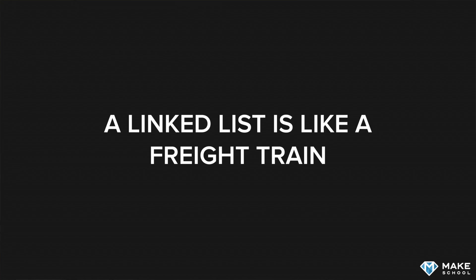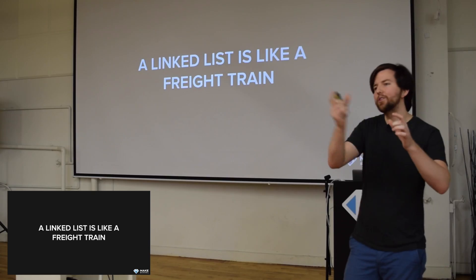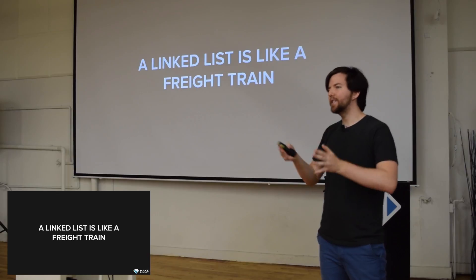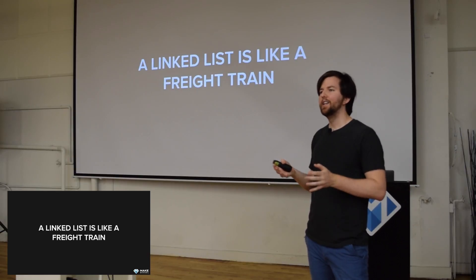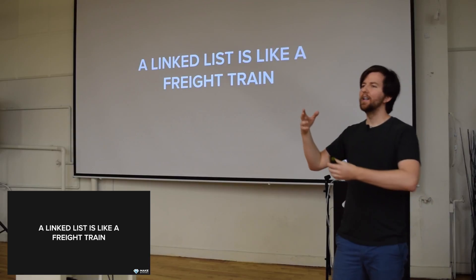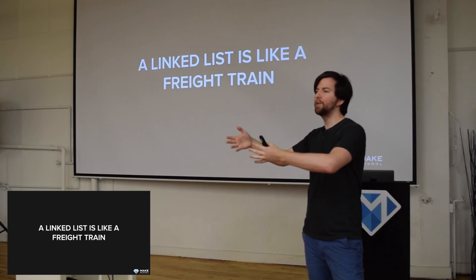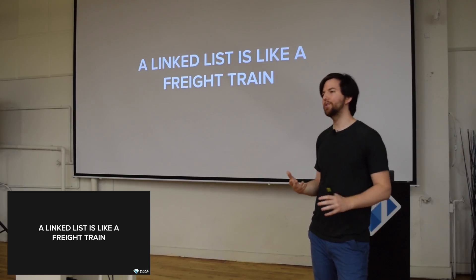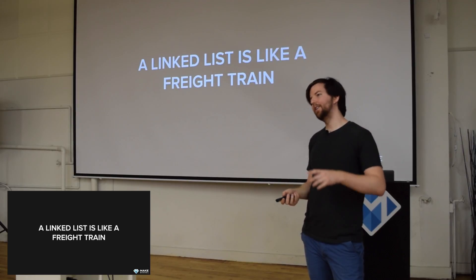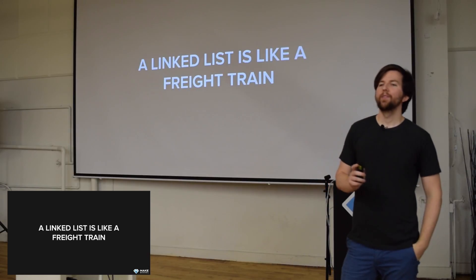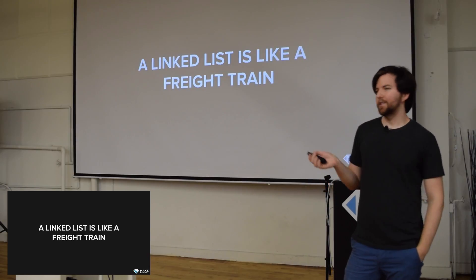A linked list is like a freight train — a bunch of carriages connected together that can be different sizes and have different stuff in them. You can have coal cars alongside shipping containers from giant cargo boats, all on the same train.